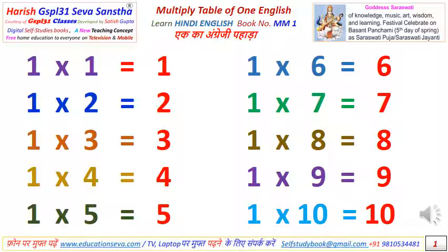Multiply in 2. 1×1 jah 1. 1×2 jah 2. 1×3 jah 3. 1×4 jah 4. 1×5 jah 5.